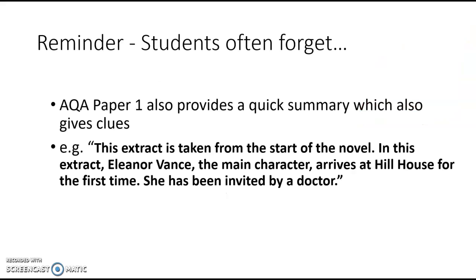Read the blurb. Lots of students forget, and I advise that you don't forget the blurb. This extract is taken from the start of the novel. In this extract, Eleanor Vance, the main character, arrives at Hill House for the first time. She has been invited by a doctor. You will get foreshadowing in the blurb — the fact that it's the first time she's been there, so it's mysterious to her, it's strange. And there's a doctor coming, so that's going to foreshadow upcoming events.